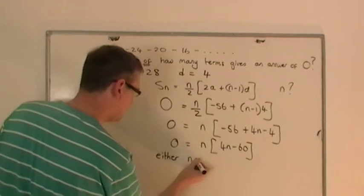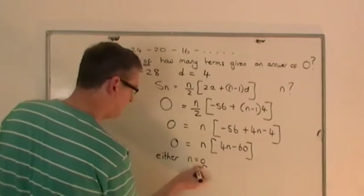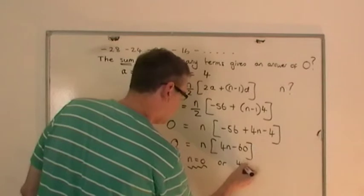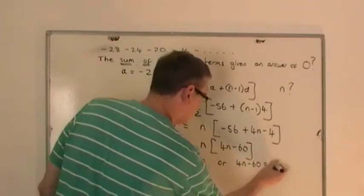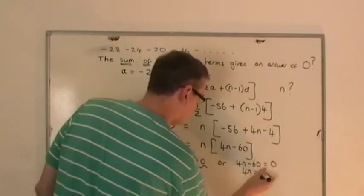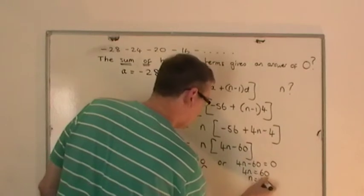Either n is equal to 0, that's the first answer, or 4n minus 60 equals 0, in which case 4n equals 60, in which case n equals 15.